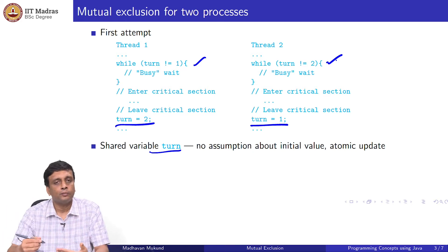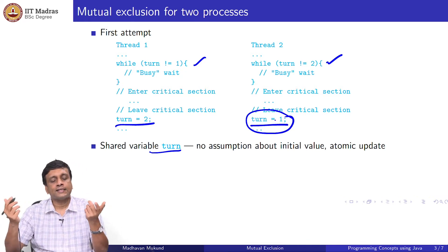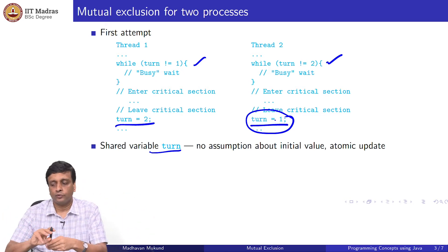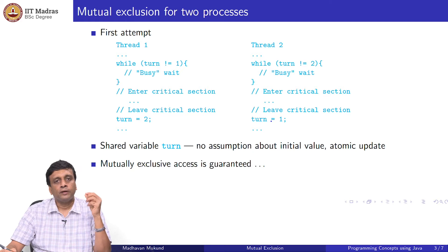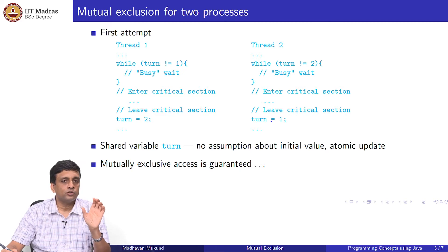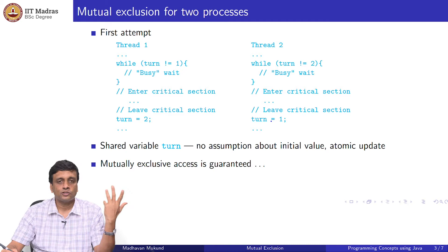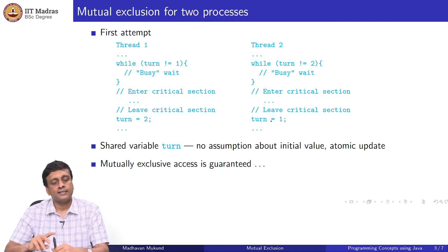If both of them are trying to get in, it is either 1 or it is 2. One of them will say it is not equal and continue the busy wait, the other will say it is equal, the while will exit, and it will proceed. Because of this kind of switchover, if the while succeeded because it was 2, the value will be set to 1 and the other thread's while will now succeed, and they will be let through. Using this kind of reasoning — which you have to formalize a little — you can argue that mutually exclusive access is guaranteed.